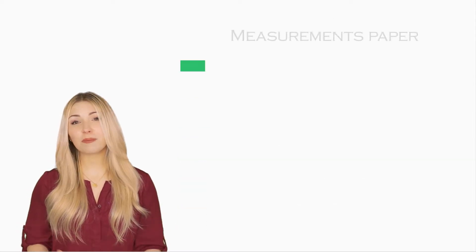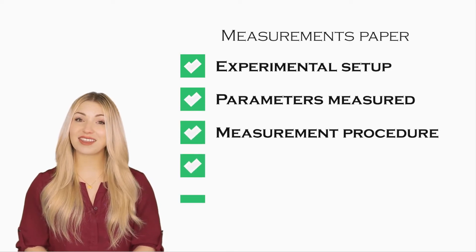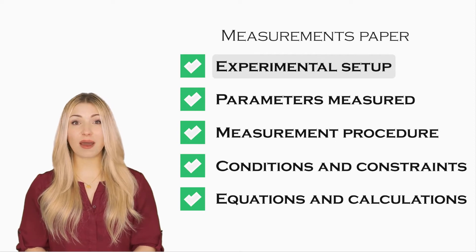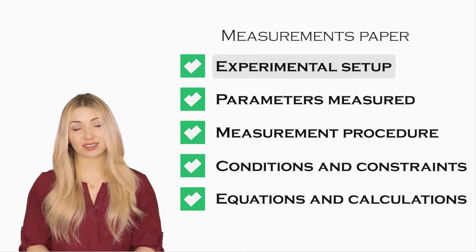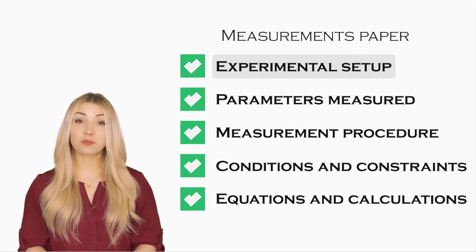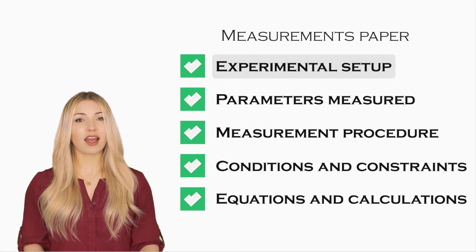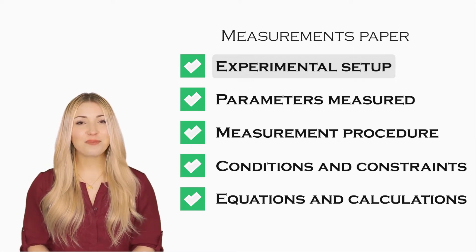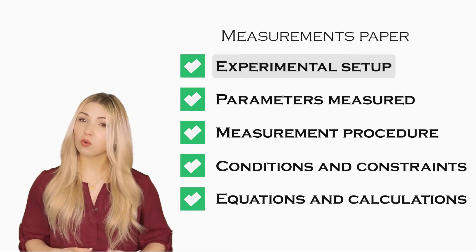If you are writing a paper that deals with measurements, you would typically include the following information in your materials and methods section. You can start by talking about the experimental setup. You can try to answer these questions. What equipment was used to perform the measurements? What was the make and the model of the equipment? How many technicians took the measurements? How experienced were the technicians?